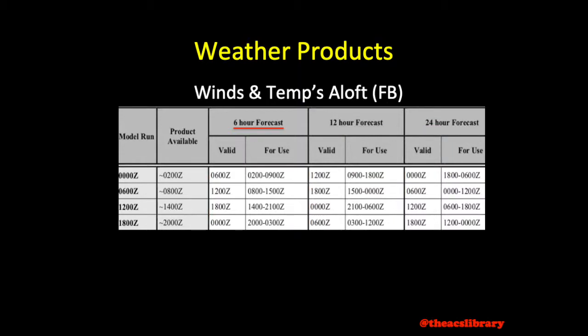A 6-hour winds aloft generated at 0 Zulu does not become valid until 0600 Zulu, but is intended for use from 0200 Zulu to 0900 Zulu. While a 24-hour forecast generated at the same time of 0 Zulu would not be made valid until 22 hours after issuance, and is intended for use from 1800 Zulu to 0600 Zulu the following day.